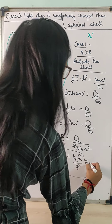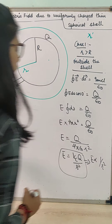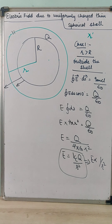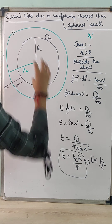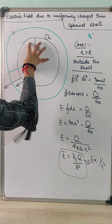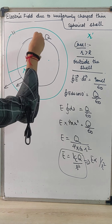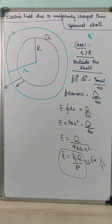This implies the electric field is inversely proportional to r squared. We can also conclude that the complete shell acts as if it is a point charge with its whole charge concentrated at the center, because the electric field due to a point charge is also given by Kc Q by r squared. This is the first case.